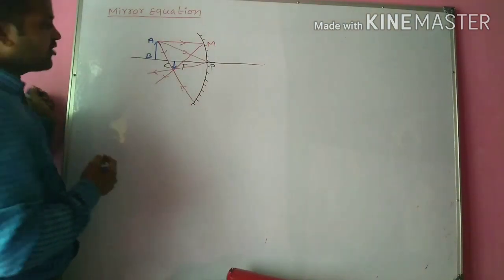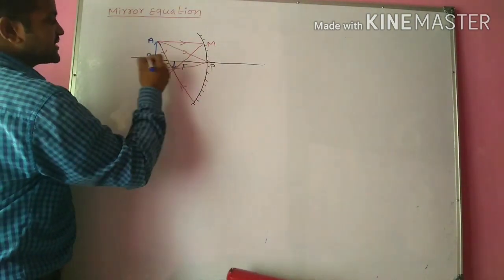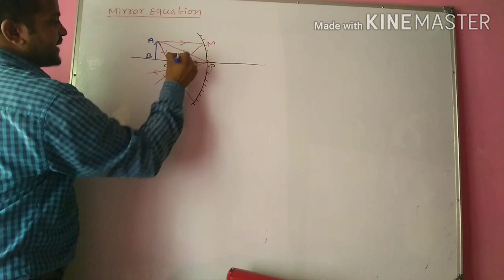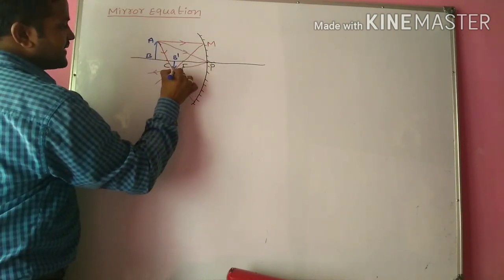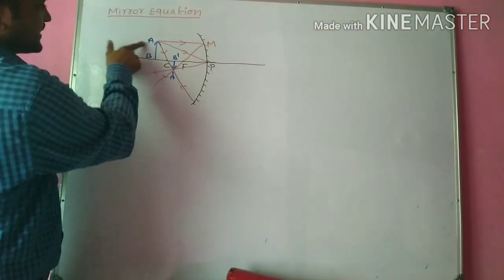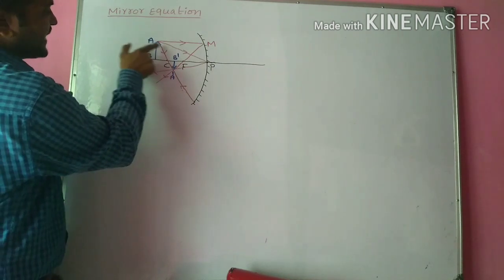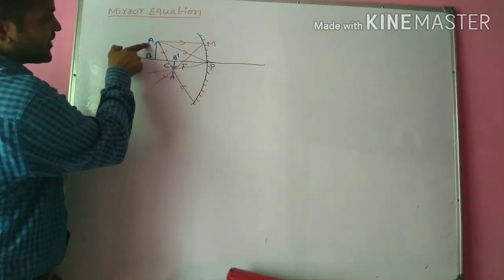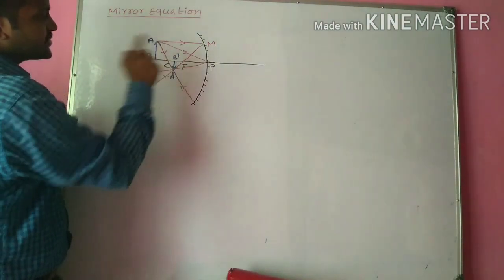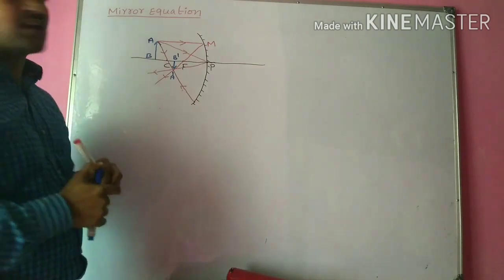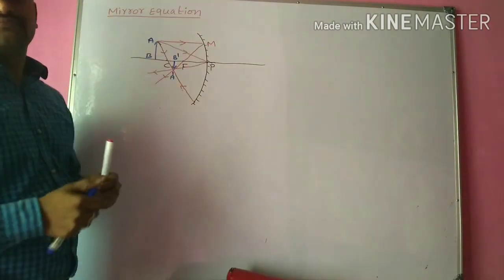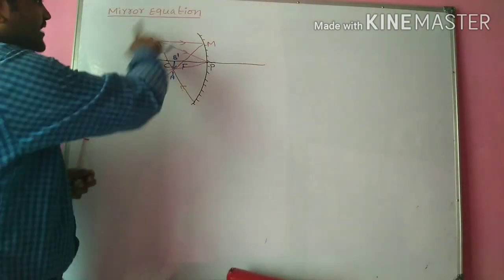The image is labeled as A'B', where A' corresponds to the tip A of the object and B' corresponds to B. This is the complete ray diagram.